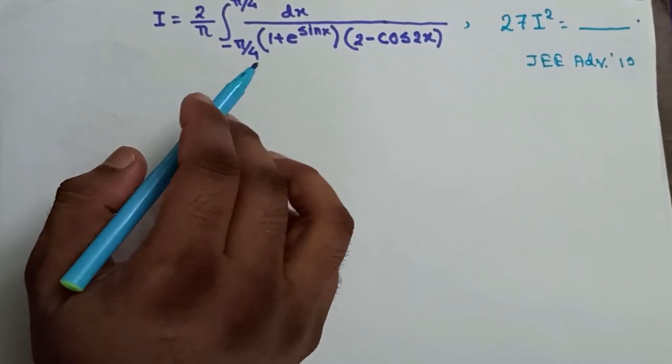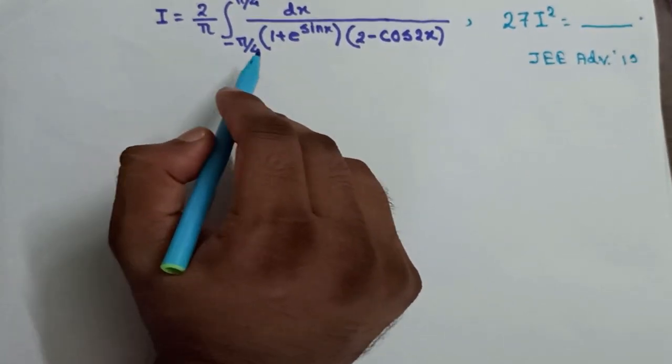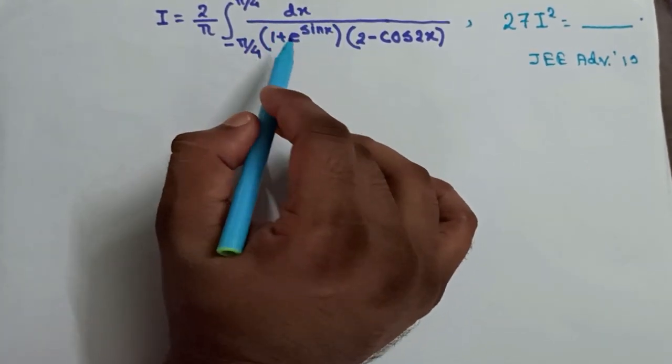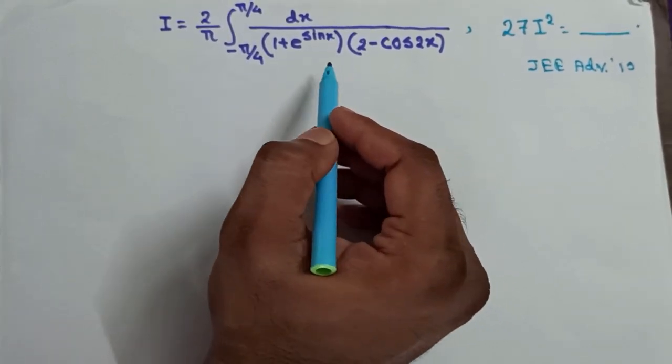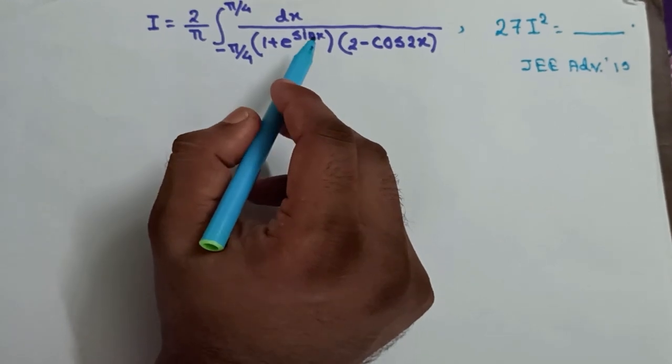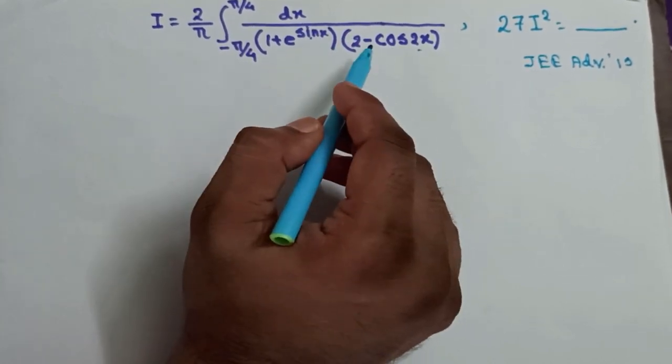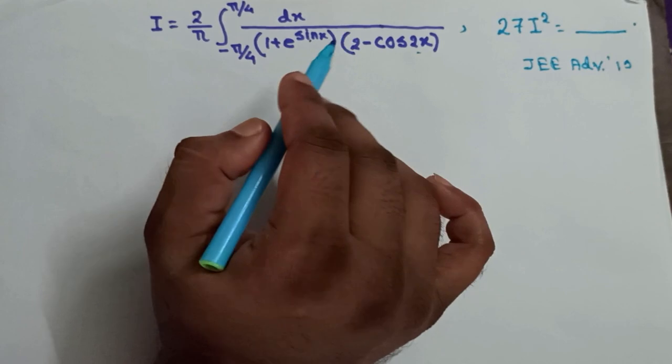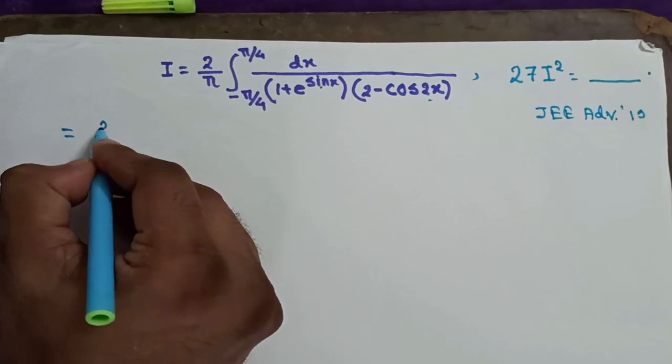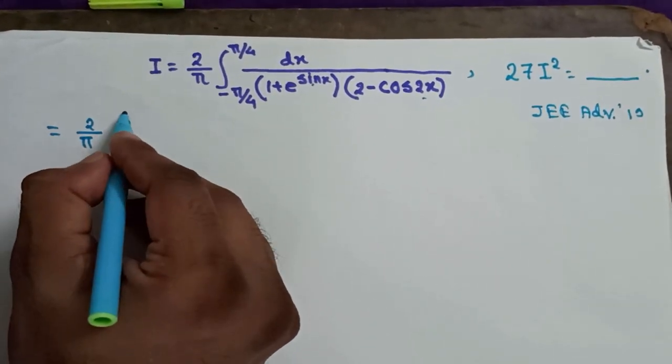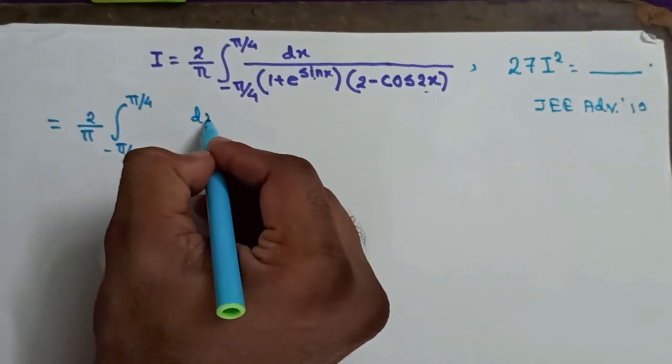Now how to solve it? First of all, in this type of problem, whenever I see this type of limits, the same limit only differing in sign, we may think about whether the integrand is even or odd. This portion is obviously even, but this one is neither even nor odd, so we cannot use that property. We cannot use substitution also because sine is here, cosine is here. What's left for us? We can use the property sometimes known as King's rule.